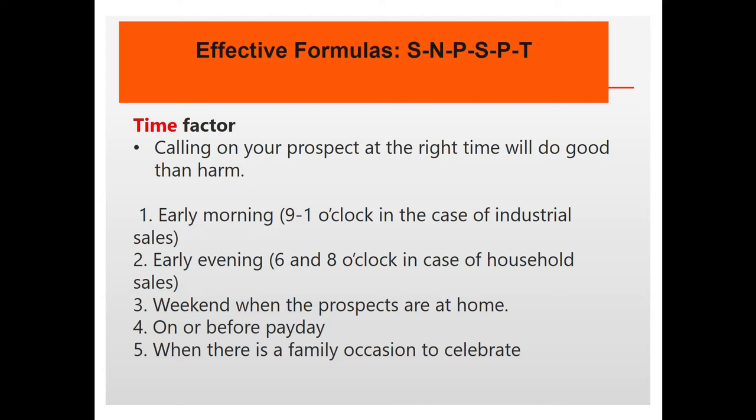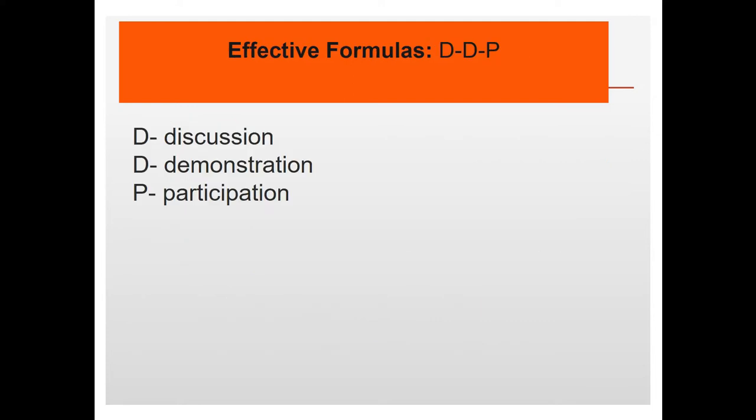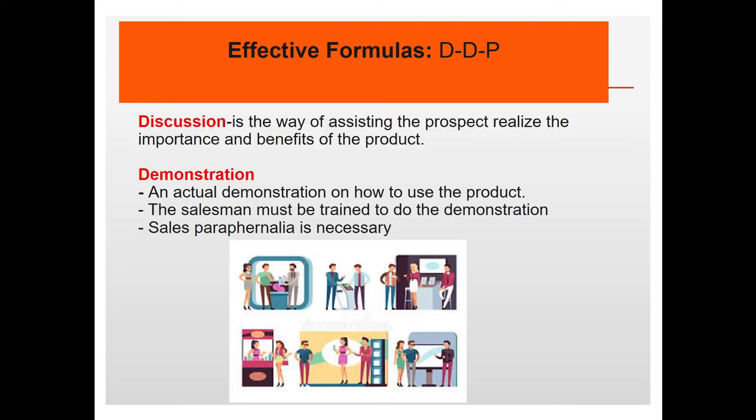Next is DDP: Discussion, Demonstration, and Participation. Discussion is the way of assisting the prospect to realize the importance and benefit of the product. The emphasis is on discussing the benefit of the product rather than just its features.